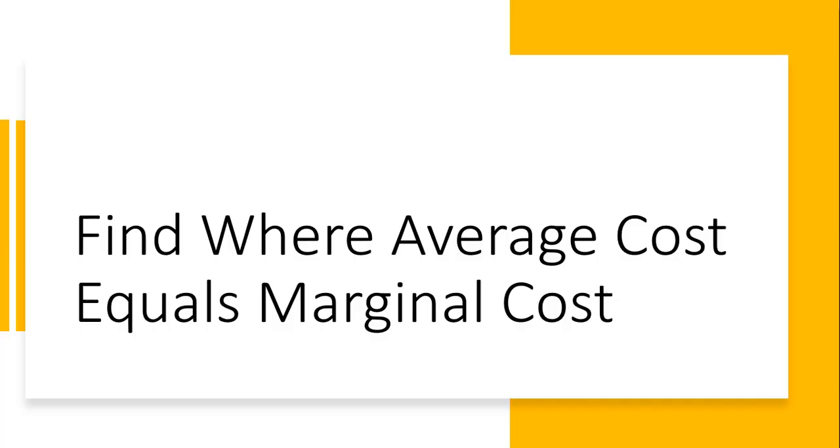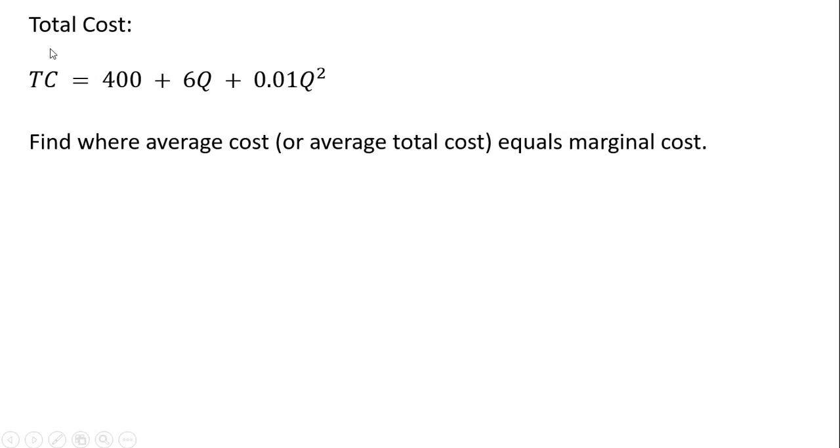Hello, in this video we're going to find where average cost equals marginal cost. Here's the firm's total cost of production given by the following equation where q is the quantity of output. We want to find where average cost, or what some books call average total cost, equals marginal cost.